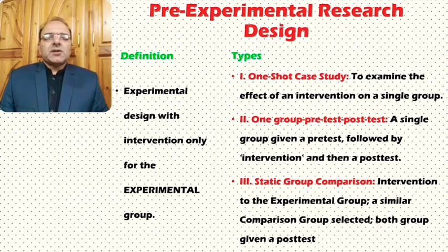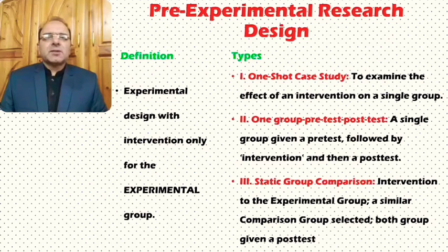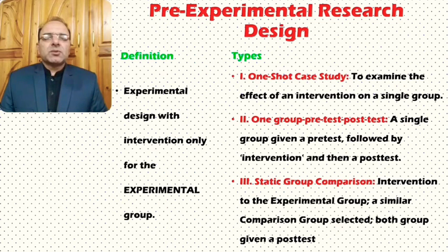The third type is the static group comparison. Here, intervention is given to the experimental group first, then a similar group is selected. Both groups are then given a post-test, and on the basis of the results, we can decide what the impact of the intervention was. That covers pre-experimental research designs.